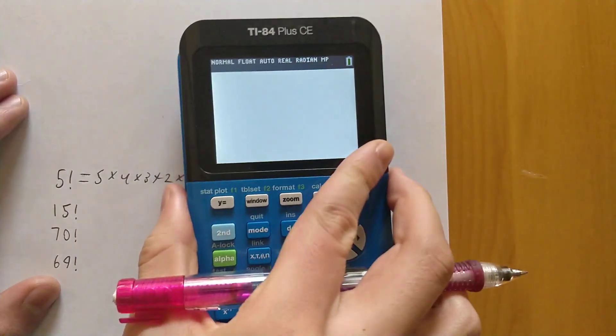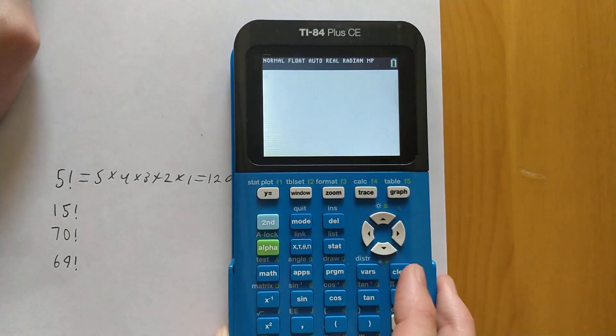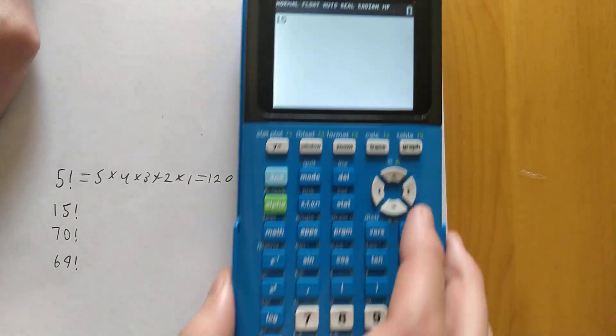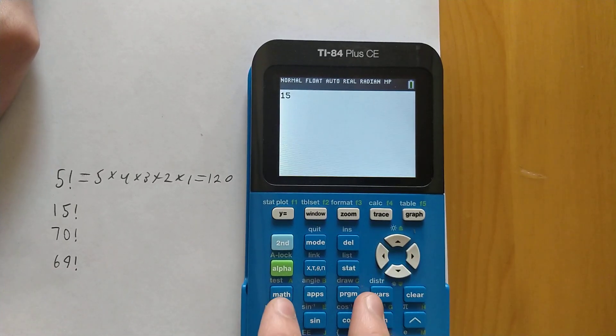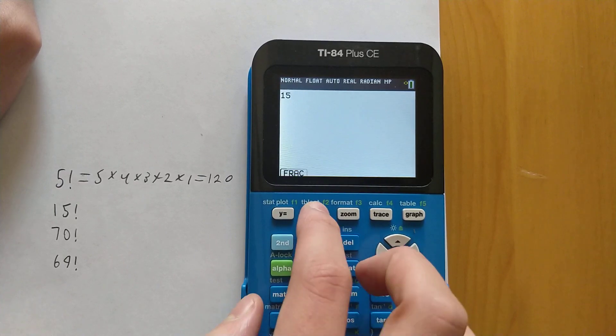But this gets much more difficult when you have larger numbers like 15. So let's see if we can calculate that. We can start by just typing 15 into the calculator home screen. And then to get to the factorial symbol, there are two ways we can get there. The first way is going to alpha and then window, which is F2.